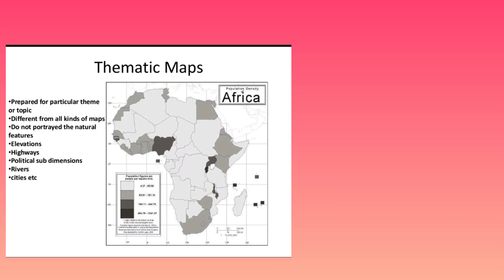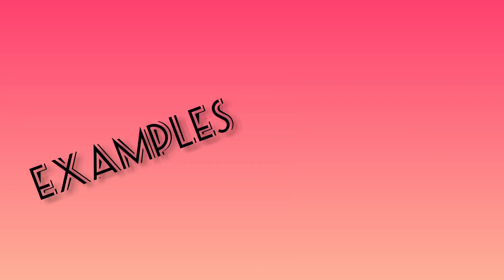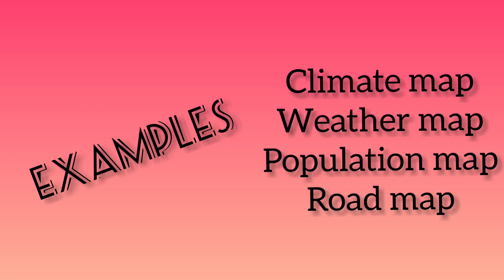Next, we will discuss about thematic map. A thematic map is also called by another name — special purpose map. We are going to get only one type of special information; only one topic of information will be available in this map. Examples of thematic maps are: climate map, weather map, population map, and road map. These are maps which give information only related to that particular topic.